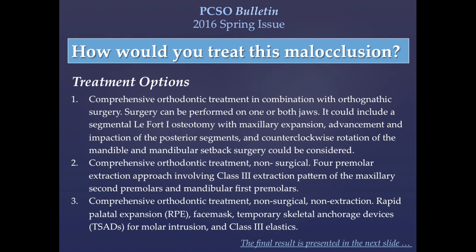There are various treatments that can be used to treat this case effectively. First, a surgical approach in which orthodontics would be undertaken in combination with orthognathic surgery of one or both jaws. Options include a LeFort 1 osteotomy with maxillary expansion, advancement, and impaction of posterior segments, or a mandibular setback surgery could be performed. Next, a non-surgical comprehensive orthodontic correction including extraction of the maxillary second bicuspids and mandibular first bicuspids could be performed. Another comprehensive non-surgical non-extraction plan can include any combination of rapid palatal expansion, face mask therapy, temporary skeletal anchorage devices for molar intrusion, and class III elastics.